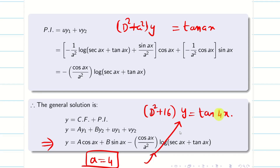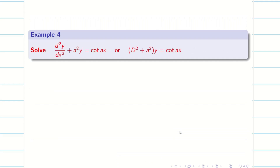Whatever number appears, solve the general form D squared plus a squared into y equal to tan(ax), or secant(ax), cosecant(ax), or cot(ax), then substitute the specific value of a given in the question. This saves time and is error free. Now let us go into the next problem — the partner of tan(ax), which is cot(ax).